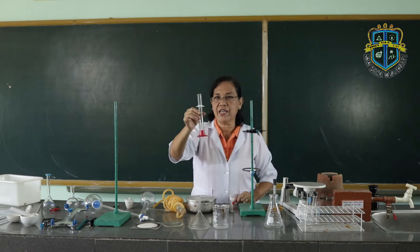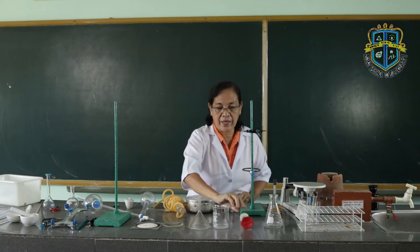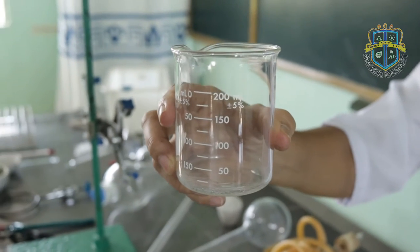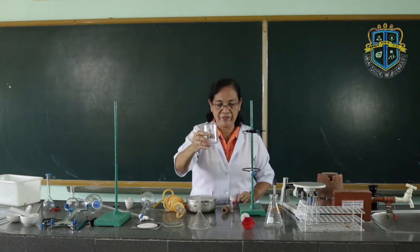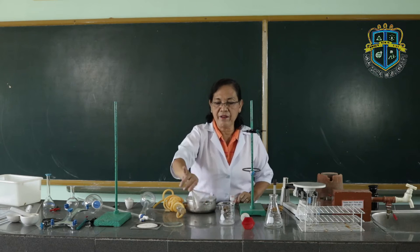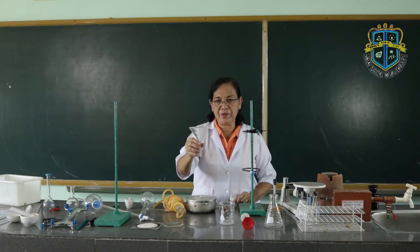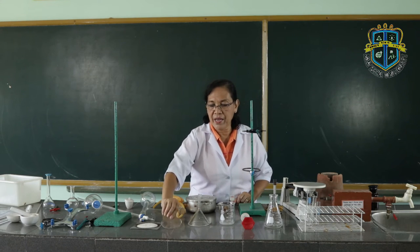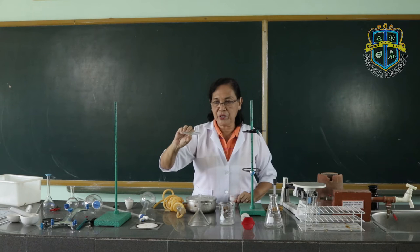Then we have the graduated cylinder. This is used to measure liquids. Then we have the beaker. This is used to contain liquids and also for measuring large amounts of liquids. Then we have the ordinary funnel, which will aid you during filtration operations. We also have the watch glass, which is used to contain substances for you to observe, be it a solid or a liquid.